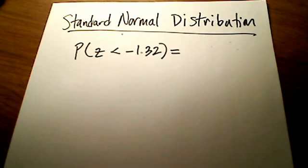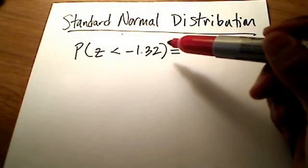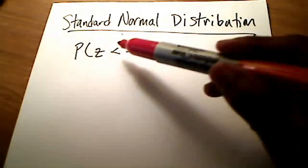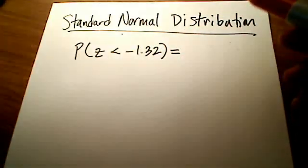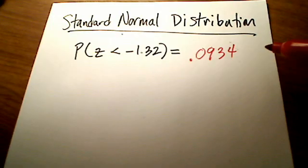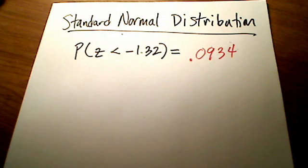In this short video, I want to show you how to play the game backwards. In a previous video, I showed you that if we were looking for the probability that we had a z less than negative 1.32, we had an area of .0934. But what I mean by playing the game backwards is this.